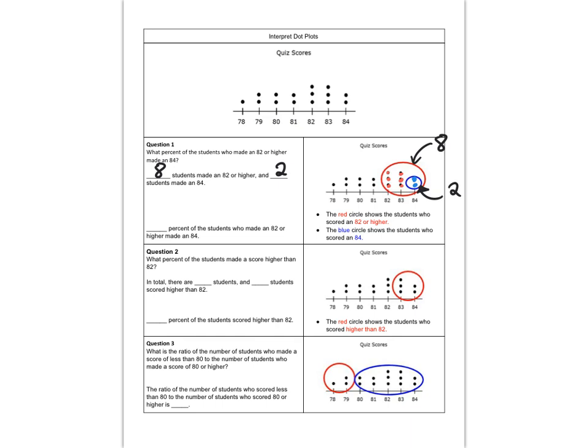So eight students made an 82 or higher. We're gonna count these six and these two, because the ones in the blue bubble also made an 82 or higher. And then two students made an 84, and those are the two that are also in the blue bubble right there. So that's gonna be two out of eight equals x out of 100. I will simplify this and rewrite it as one over four equals x over 100. 4 times 25 equals 100. So then 1 times 25 would equal x. That means x is 25. So 25% of the students who made an 82 or higher made an 84.